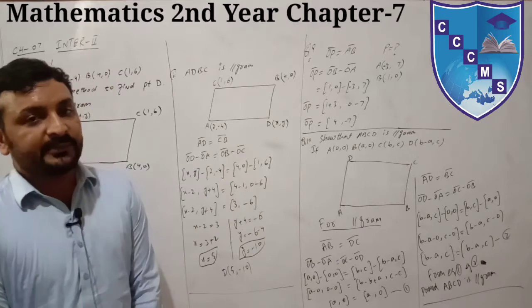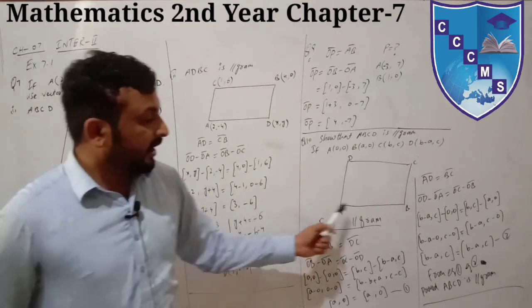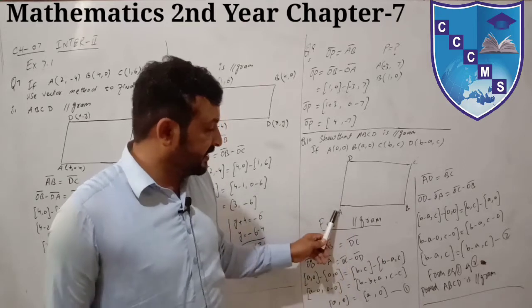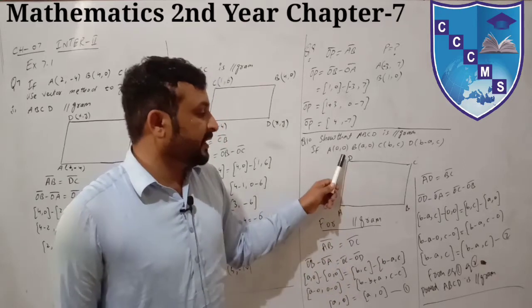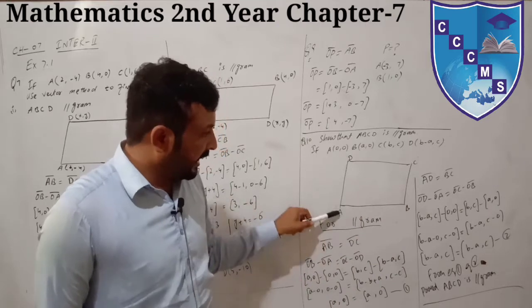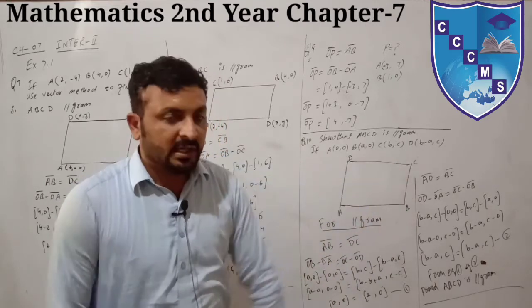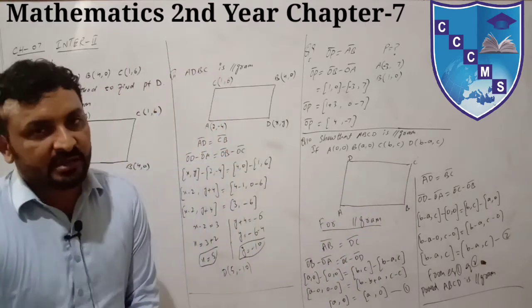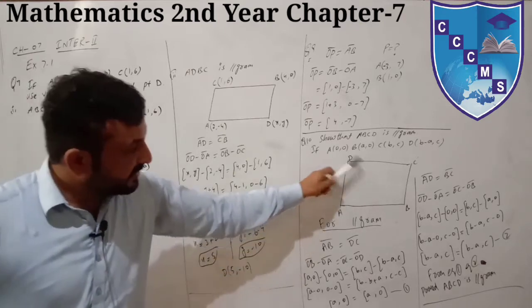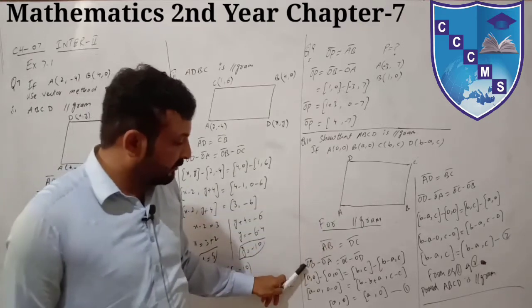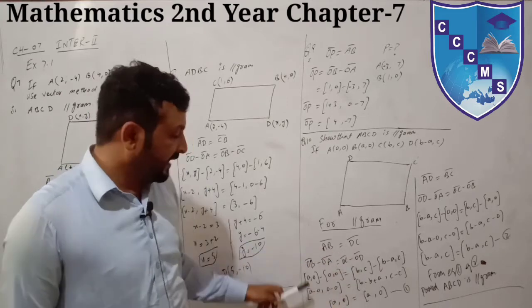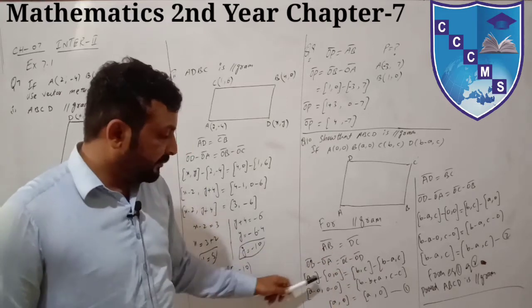In a parallelogram, opposite sides are equal. So AB should equal DC, and AD should equal BC - as I showed you before. Starting from A at the bottom and D at the top: AB should equal DC, and AD should equal BC. These are the two conditions. Apply the formula for AB: OB minus OA; and for DC: OC minus OD.